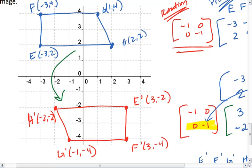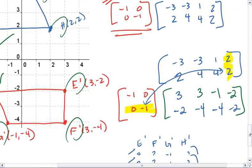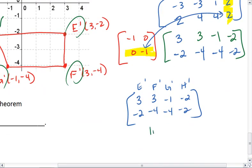So we see that we get F which moved to F prime, E which moved to E prime, G moved to G prime, and H moved to H prime, giving us E prime is 3, negative 2, F prime is 3, negative 4, G prime is negative 1, negative 4, and H prime is negative 2, negative 2, which we got from our image matrix.